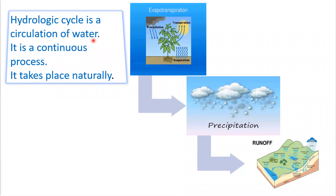The hydrologic cycle is a continuous, natural circulation of water. It begins with evaporation of water from the ocean surface. As moist air is lifted, it cools and water vapor condenses to form clouds. Moisture is transported globally until it returns to the surface as precipitation. Once water reaches the ground, it may evaporate back into the atmosphere or penetrate the surface to become groundwater. Groundwater seeps into oceans, rivers, and streams, or is released through transpiration. The remaining surface water is runoff, which empties into lakes, rivers, and streams and is carried back to the oceans, where the cycle begins again.